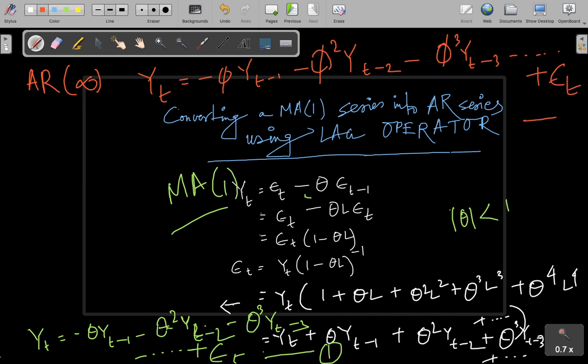That means basically equation 1 and equation 2 are the same. Which means finally I can write that an MA(1) series can be converted into an AR infinity series. Yes, it is of infinite order. That's basically the finding here.